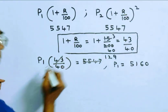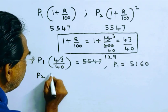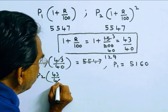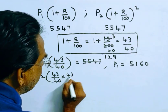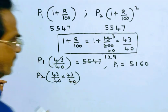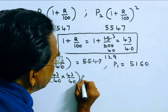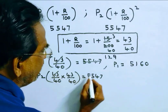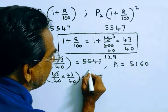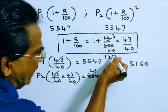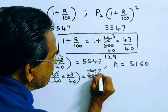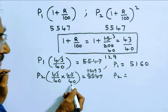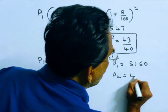In the same way, P2 into (1 + R/100) squared, that is 43/40 into 43/40, equals the second installment value. The second installment is also equal to 5,547. On cancellation with 43, we get 129 above. Again, cancelling with 43, P2 is equal to 4,800.